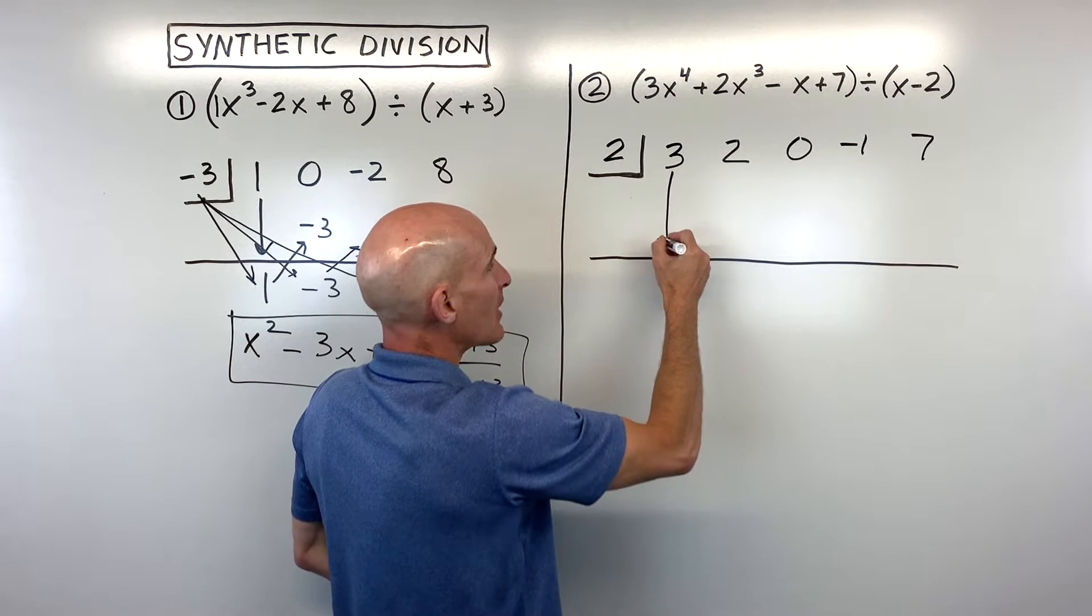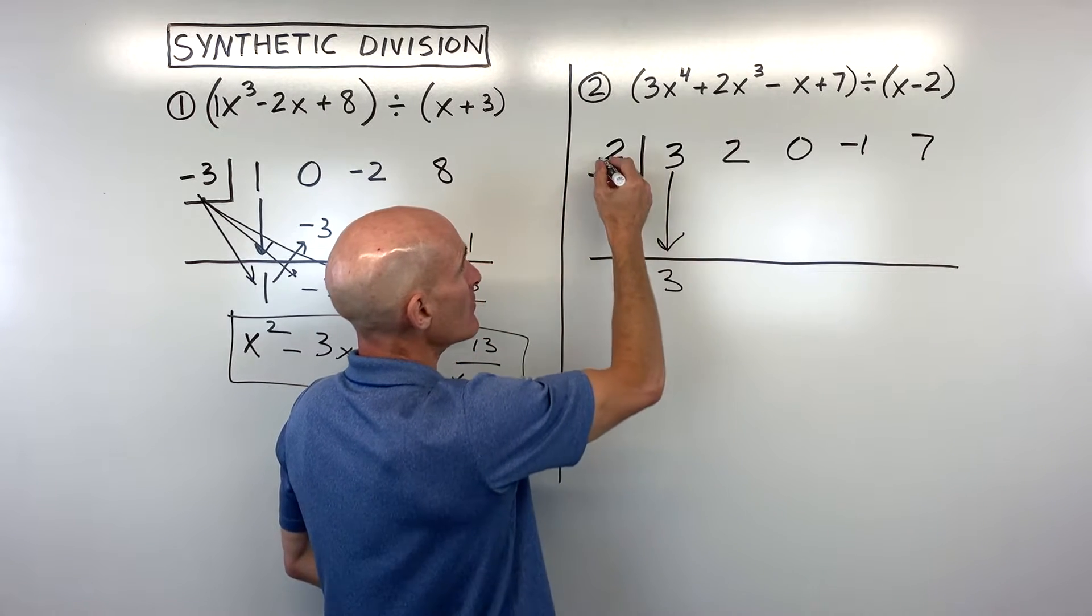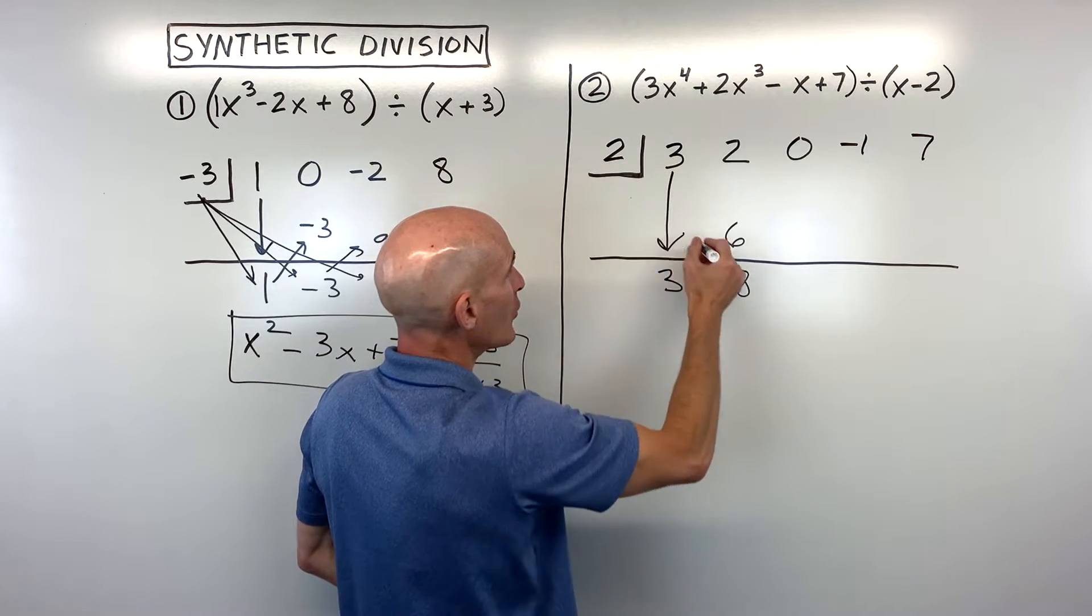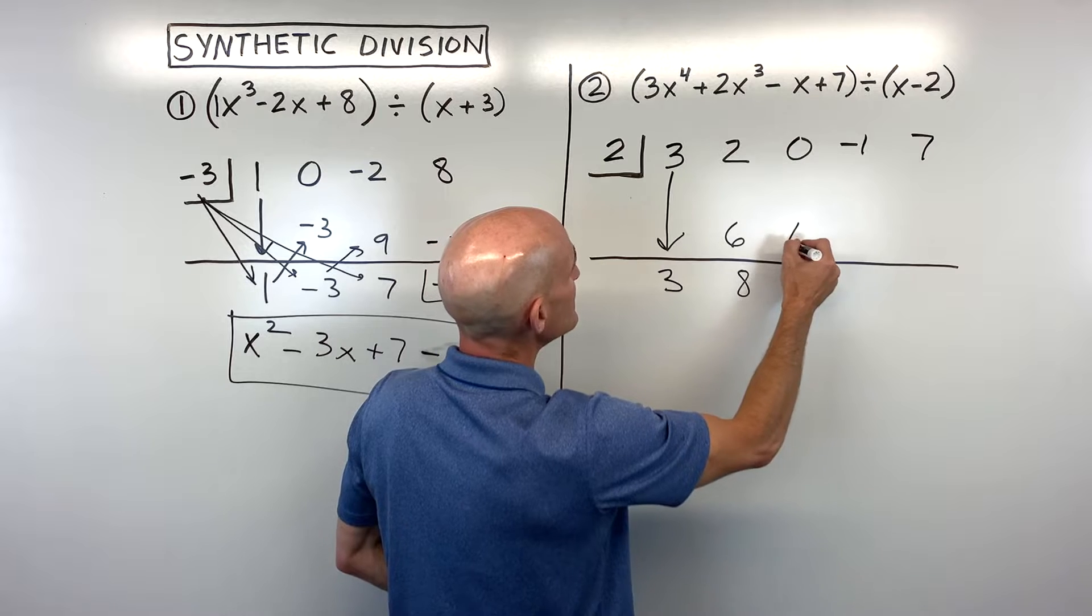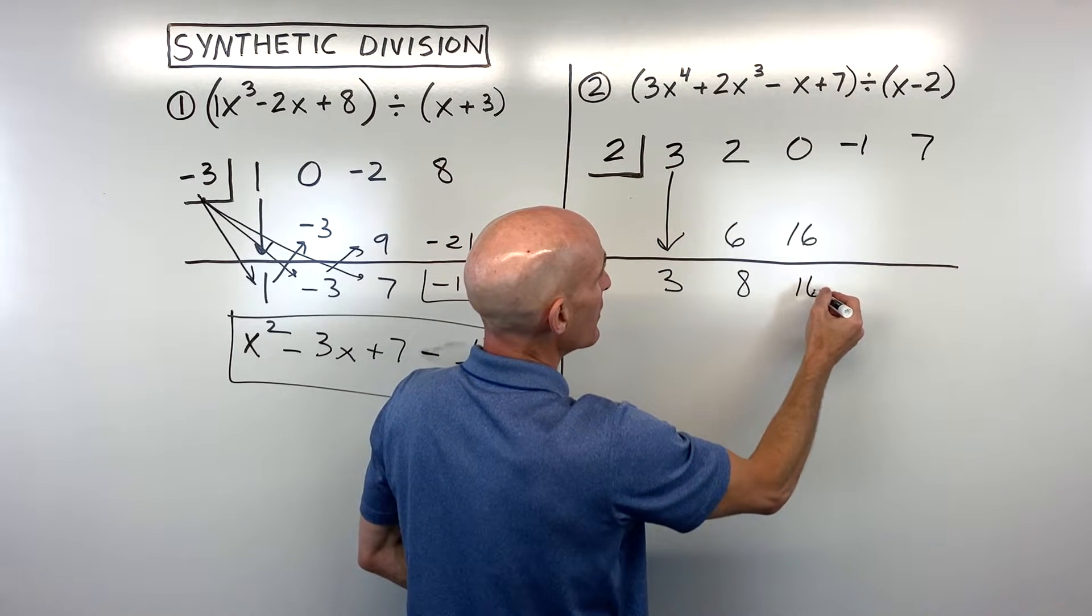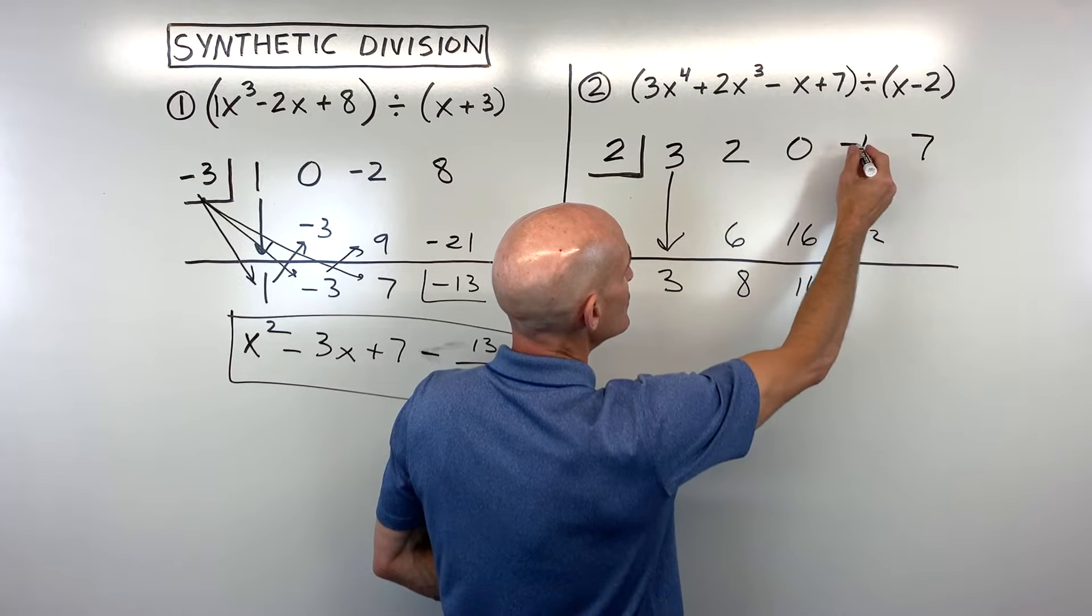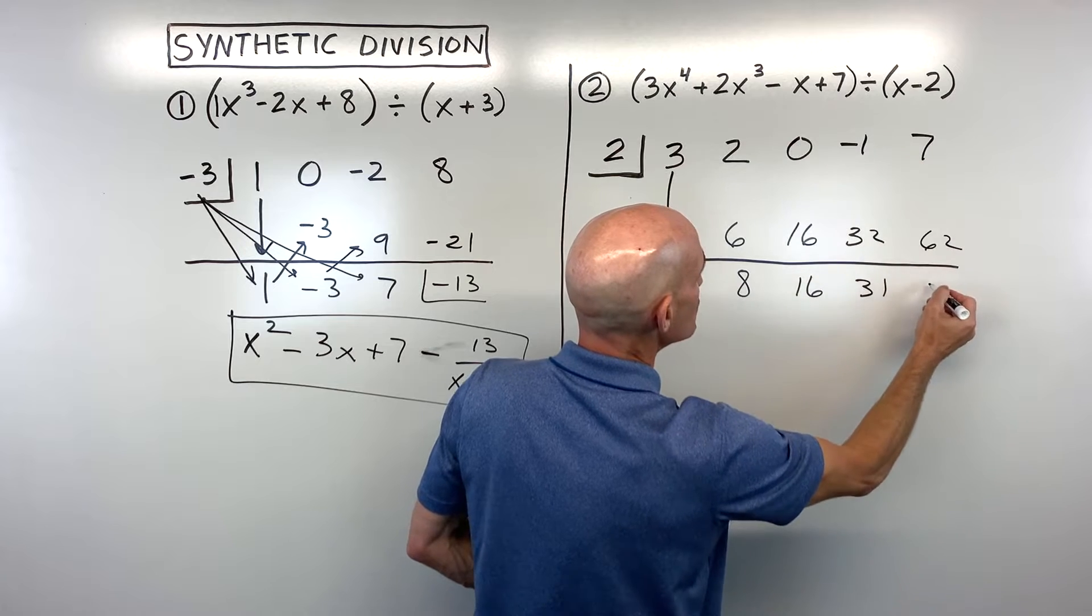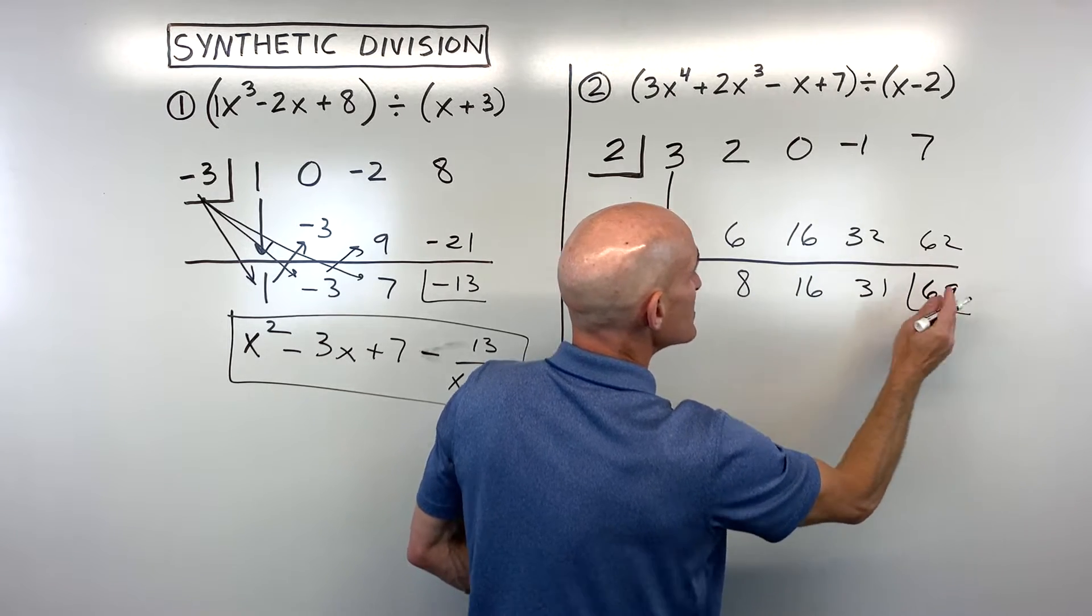Remember, we always drop down that first number. And then we multiply on the diagonal. 2 times 3 is 6. And we add straight down. Multiply on the diagonal. 2 times 8 is 16. And then we add straight down. 2 times 16. Multiplying on the diagonal. 32. And we add straight down. Multiply on the diagonal. That's 62. And we add straight down. And this last number is our remainder.